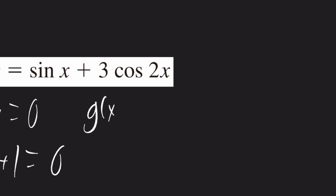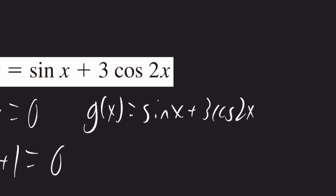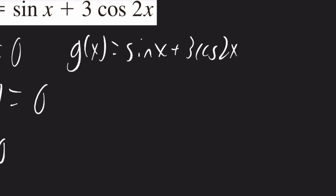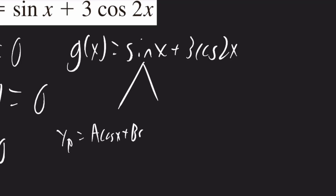Now that we have yc, we can find yp. g of x was given as sine x plus three times cosine 2x. Whenever we have a sine or cosine term, we have to include both a sine and a cosine in our yp. So from the sine x term, we'll have a cosine x plus b sine x. We'll have to do the same thing for the cosine 2x term because it has a 2x on the inside instead of just an x. So this will be plus d times cosine 2x plus e times sine 2x.